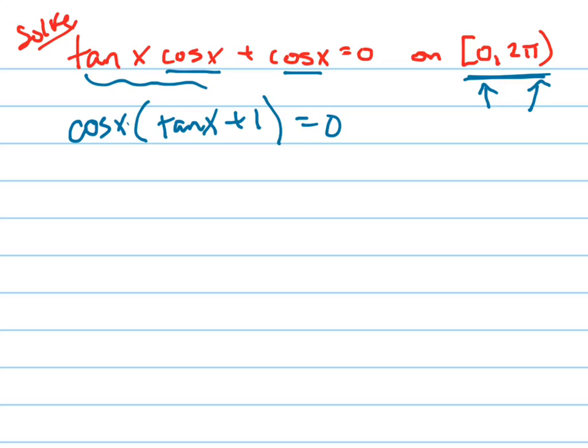Now I use the zero product property, and I say cosine of x equals 0, or tangent of x plus 1 equals 0. So tangent would equal negative 1.